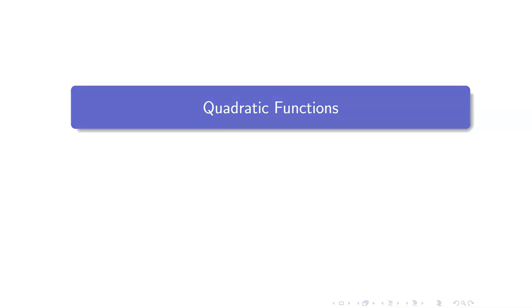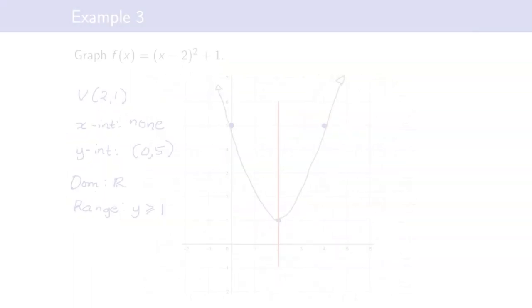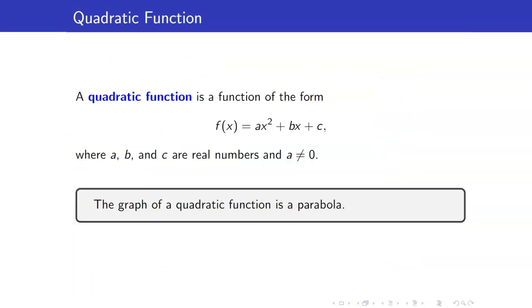In this lesson, I am going to discuss quadratic functions. A quadratic function is a function of the form ax squared plus bx plus c, where a, b, and c are real numbers and a should not be equal to 0. We want a to be not equal to 0, because if a is equal to 0, then we are just left with bx plus c, and that would be a linear function.